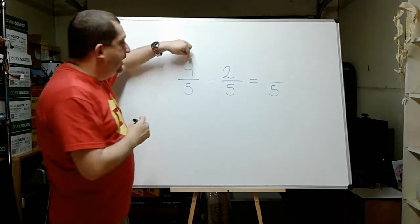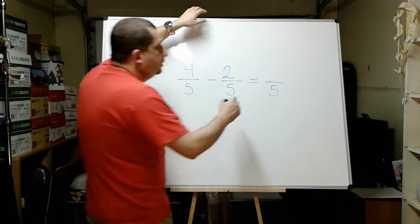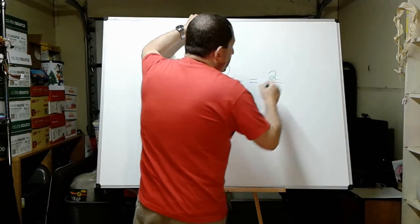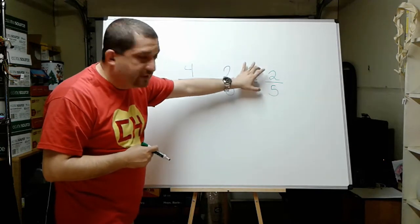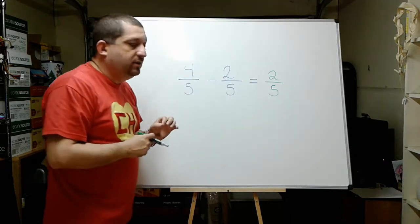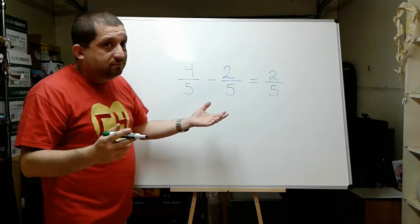Okay. And then I have 4 minus 2 equals 2. And here's my answer right here. Can I reduce this? No, I cannot reduce this. So I can stop right here. And this will be my answer. That's very nice.